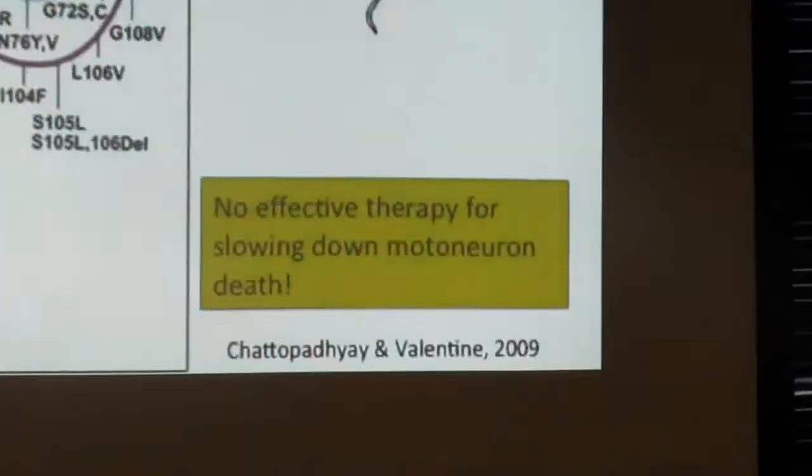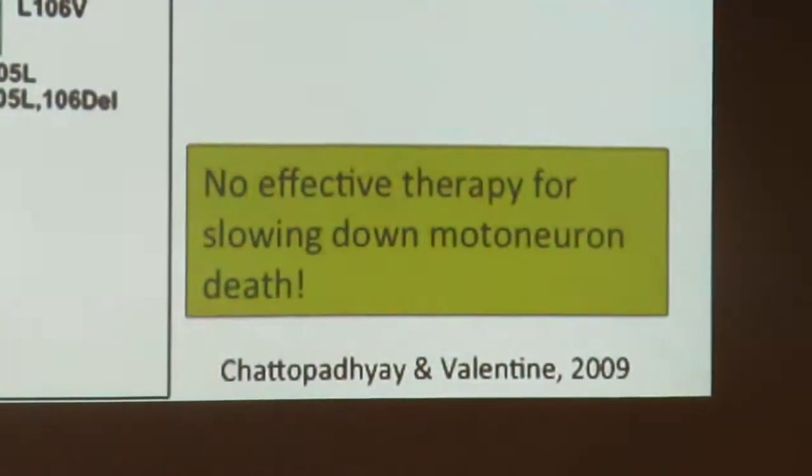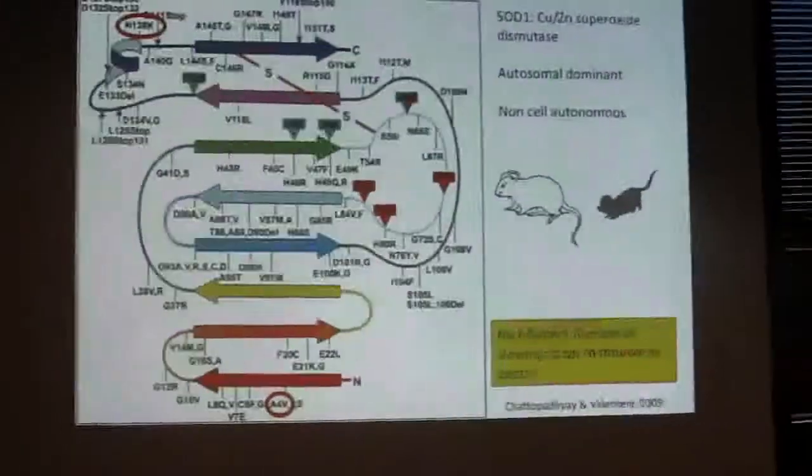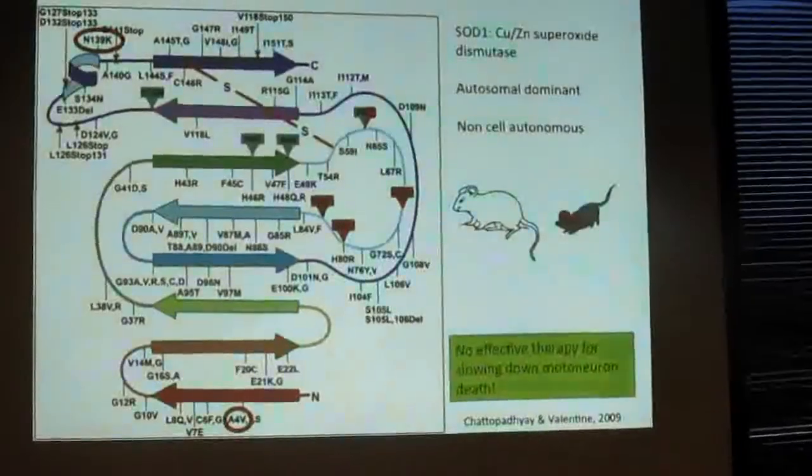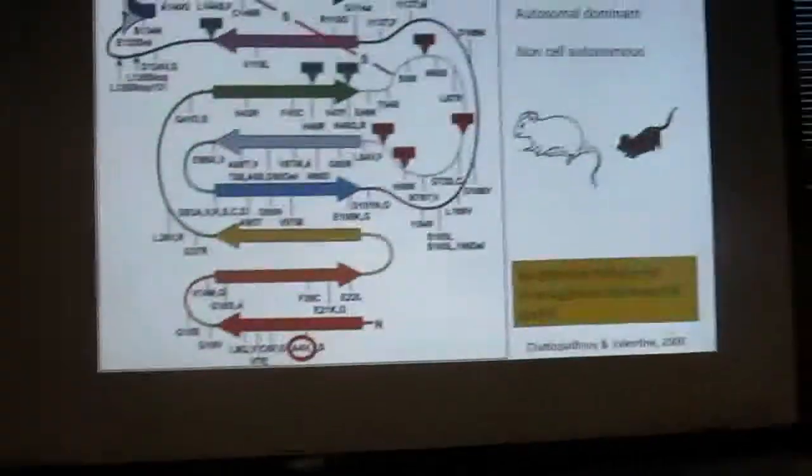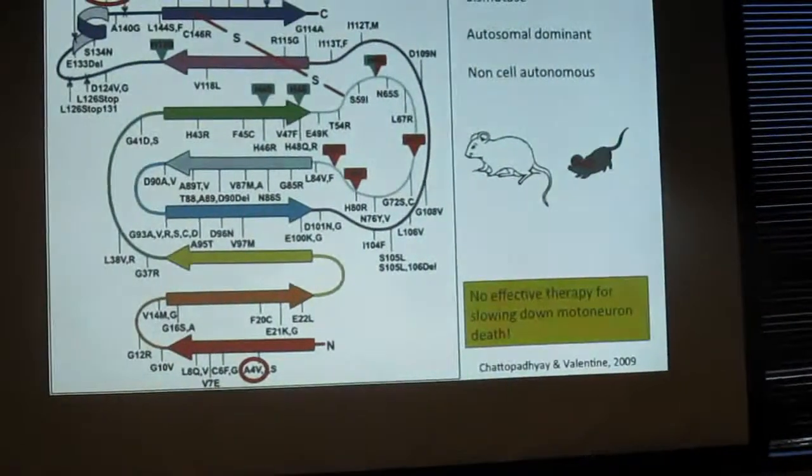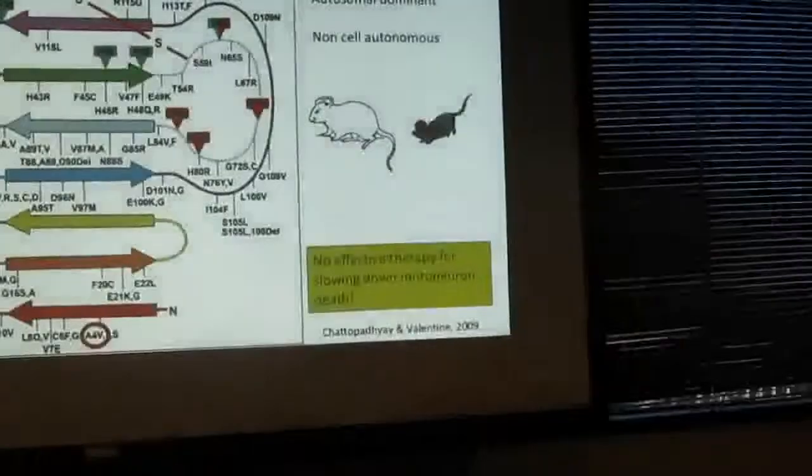The pathogenesis of ALS is actually very complex. There are basically two forms of ALS: the familial form and the sporadic form. 90% of the cases are sporadic. People focus more on the familial form, and they have found several genes that have mutations in these patients.